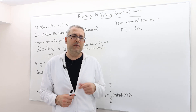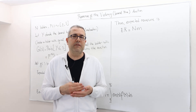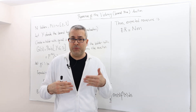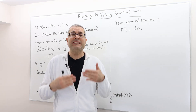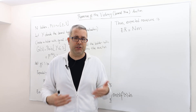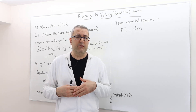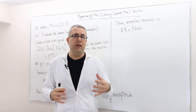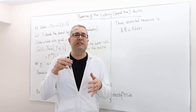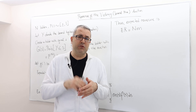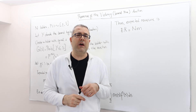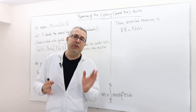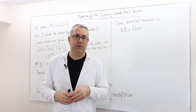In this episode, I'm going to explain how we calculate a seller's expected revenue in the second price, or Vickrey, auction. First, I'm going to give you a general way of solving, and then for a specific numerical example, I'll show you how to calculate those revenues. Intuitively, the idea is very simple.